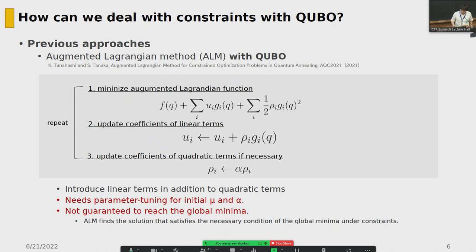Their approach minimizes the augmented Lagrangian Hamiltonian with a linear term and a quadratic term, then updates the coefficient of the linear terms, and then the quadratic terms. However, this method requires parameter tuning for initial mu and initial alpha. Also, this method is not guaranteed to reach the global minimum, since the ALM only satisfies the necessary conditions for a global minimum under constraint.